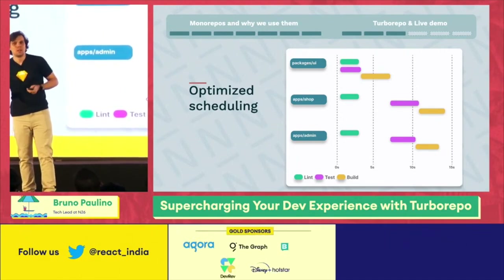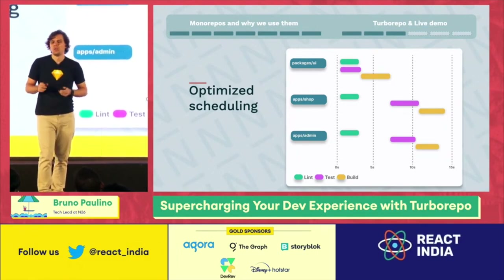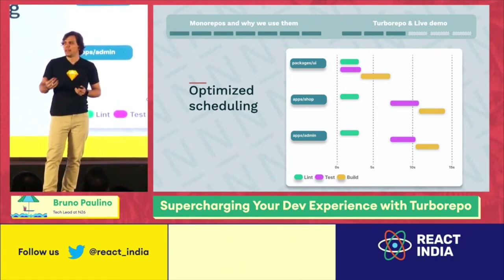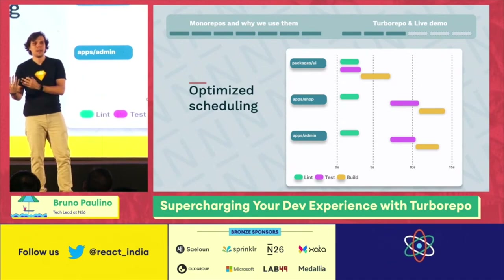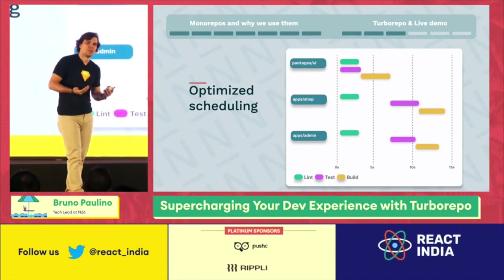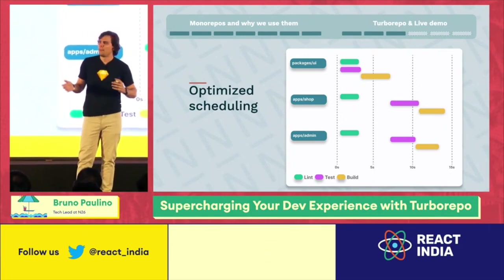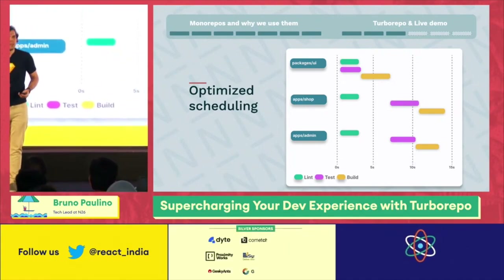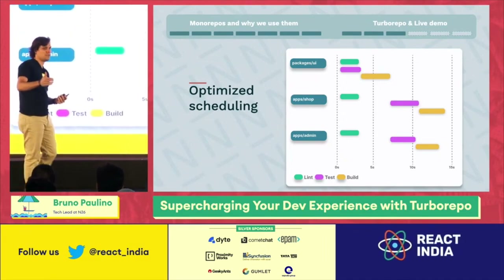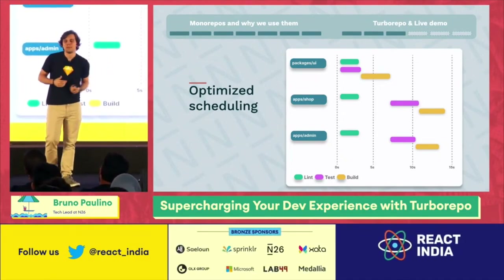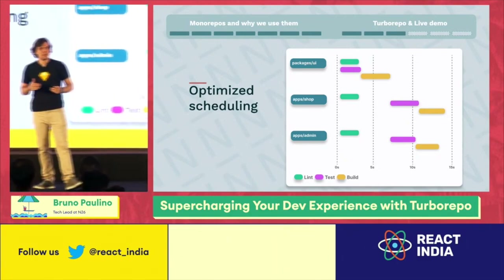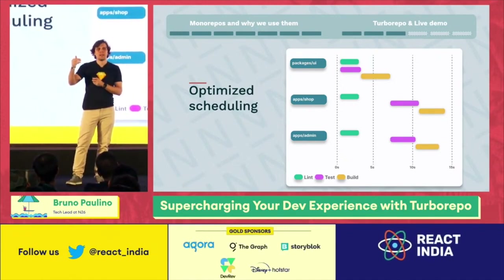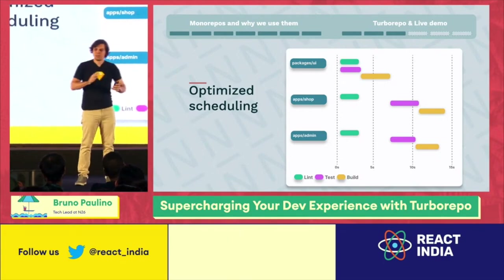TurboRepo also figures out the dependency between tasks. For example, linting is good to run in parallel across your entire codebase since the code can be linted independently. But a build is different — sometimes you need to build the library first, and then you can build your web app. TurboRepo can figure that out: it will build the UI library first to make sure the components are ready, then build the web app, so everything works at the end.